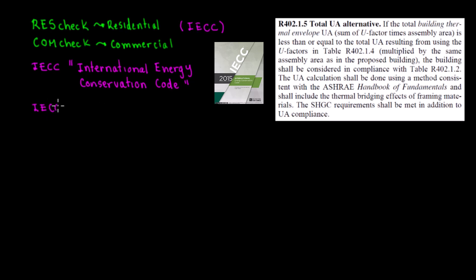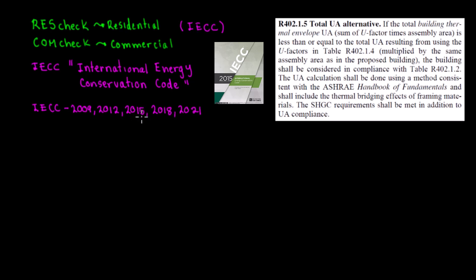Depending on the location you have to use different years of IECC. IECC has different versions or amendments — for example 2009, 2012, 2015, 2018, and 2021, roughly every three years. Some places use 2015, others use 2018. For example, Virginia uses 2018 and Washington DC uses 2015.